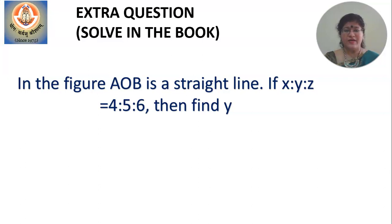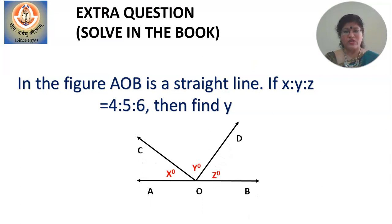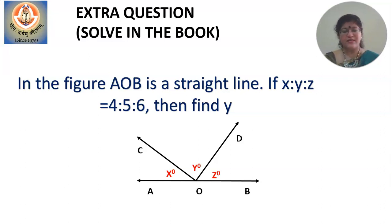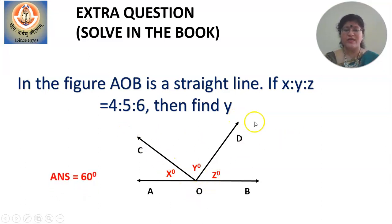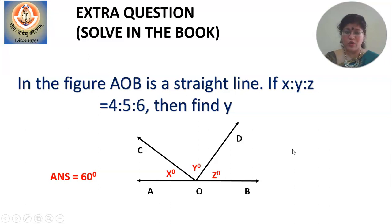Extra question: In the figure, AOB is a straight line. X is to Y is to Z is equal to 4 is to 5 is to 6. Find the value of Y. The clue is: all these angles together form a straight angle, so they are angles in a linear pair.